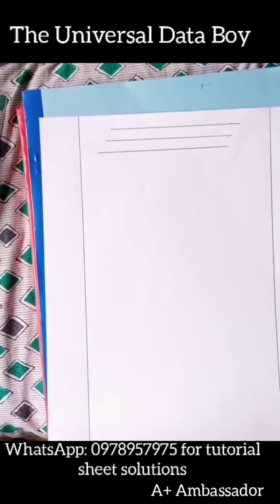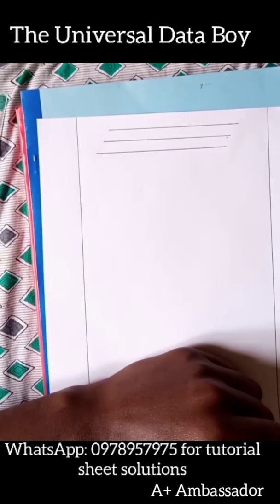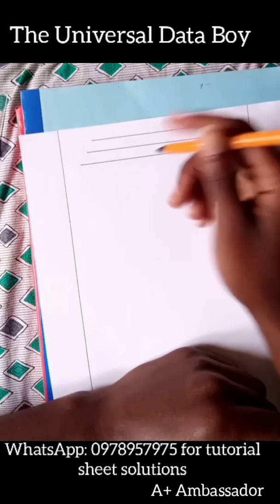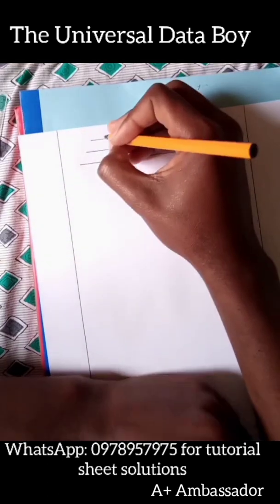Good afternoon guys, we're going to continue working on tutorial sheet five. We did the first part of question one and we're going to do the second part, that's B. It says what is the magnitude of an electric field in which the electric force on a proton is equal in magnitude to its weight?